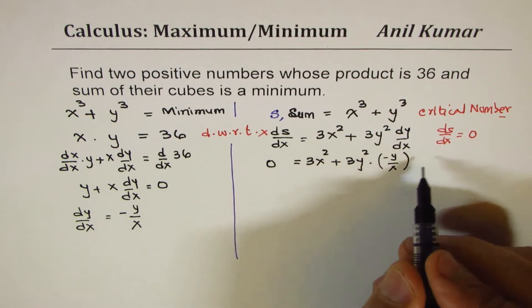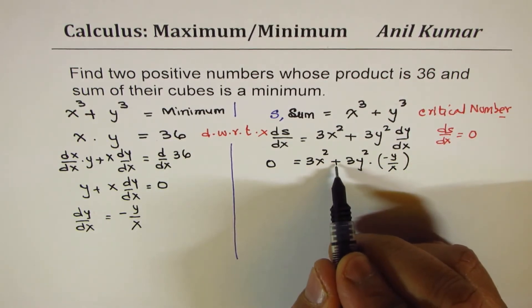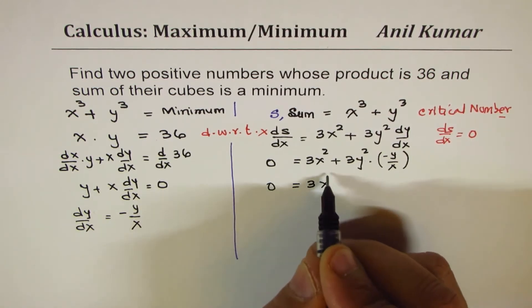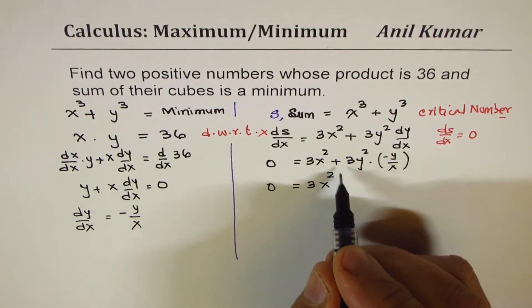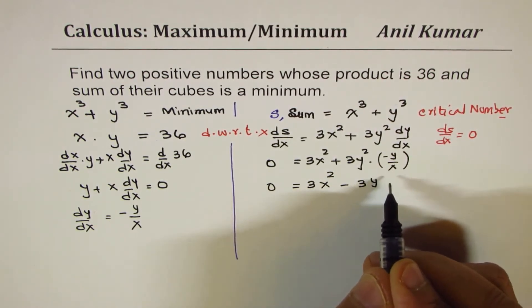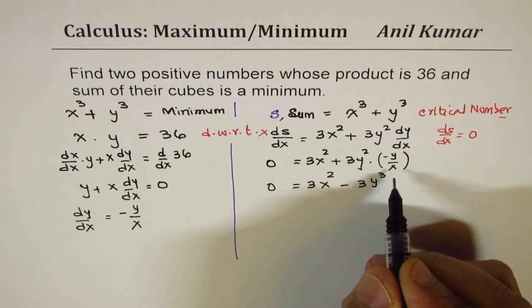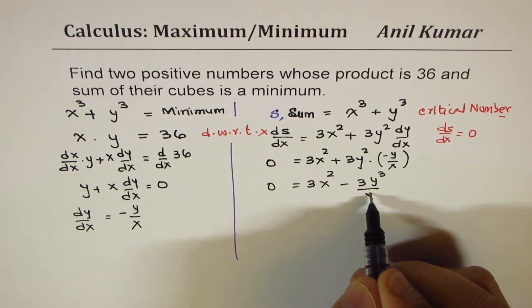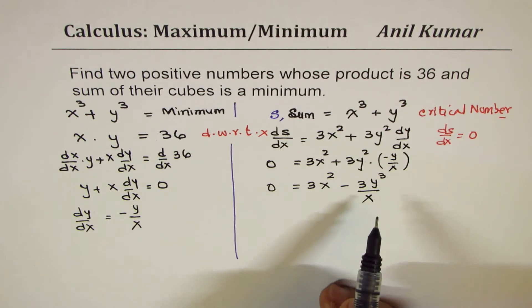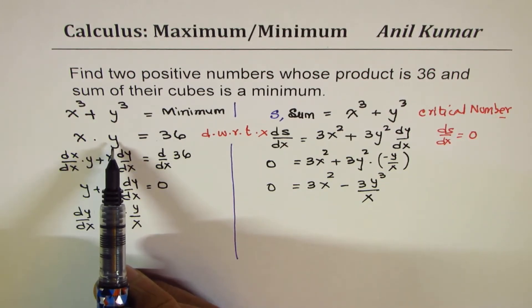So that gives us, the minus makes this negative, so we have 0 = 3x² - 3y³/x. Now we need an equation in only y, so we'll isolate y from here and we can write y = 36/x. So we also know y equals 36/x.